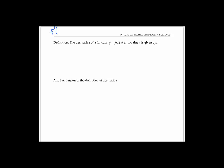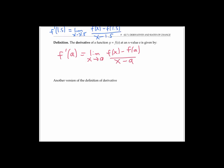We saw that the slope of the tangent line — the derivative at 1.5 — is the limit as x goes to 1.5 of f of x minus f of 1.5 divided by x minus 1.5. In general, the derivative of y equals f of x at a value a is f prime of a equals the limit as x goes to a of f of x minus f of a over x minus a. The function is said to be differentiable at a if this limit exists — meaning both the left and right limits must exist and be equal.